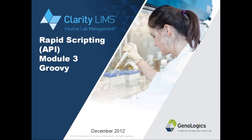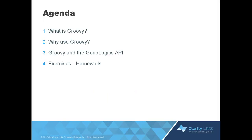Welcome to Module 3 of the API Training Series. In this module, we're going to focus on the Groovy scripting language. We'll talk very briefly about what Groovy is, why we've selected it, and how you can configure Groovy and be up and running and productive trying out the Genealogics API via some of the example scripts on the developer.genealogics.com website. And as always, there'll be some exercises which allow you to have a play and apply the knowledge.